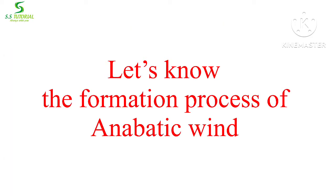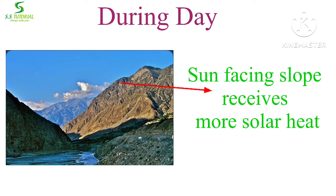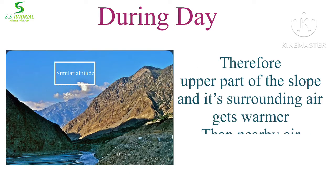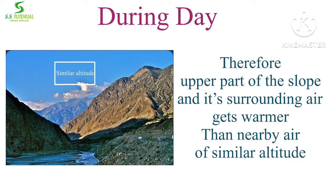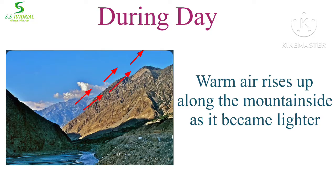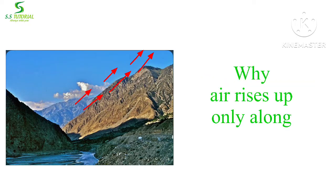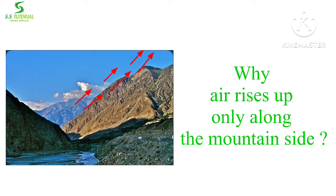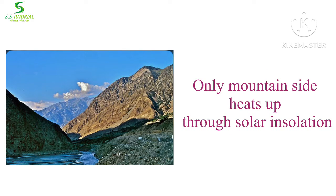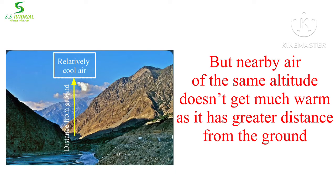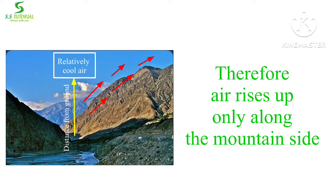Let's know the formation process of anabatic winds. During the daytime, in calm and sunny weather, the sun-facing upper part of the mountain slope receives much more solar insolation. Therefore, the upper part of the mountain slope and its surrounding air heats up faster than nearby air at a similar altitude, as it is at a greater distance from the ground. As a result, warm air rises up along the mountainside. The mountain side gets warmer through solar insolation, but nearby air at a similar altitude does not get much warmed as it has greater distance from the ground. Therefore, air rises up only along the mountainside.